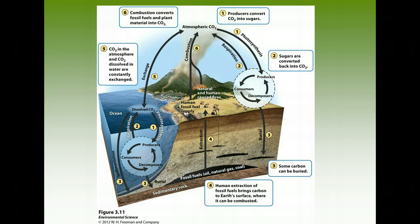When humans extract fossil fuels and burn them, combustion returns that carbon dioxide back into the atmosphere. The problem is that we are adding far more CO₂ to the atmosphere than can be removed or buried. Fossil fuels are non-renewable, and their combustion is contributing to a rise in temperature and potentially global warming. Before the Industrial Revolution, the carbon cycle was in a steady state with inputs equaling outputs. Since the Industrial Revolution, combustion has caused CO₂ emissions to exceed natural uptake.